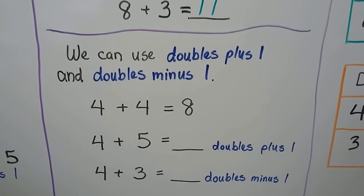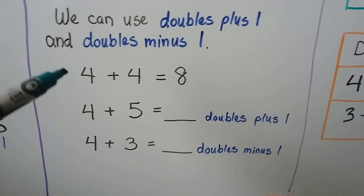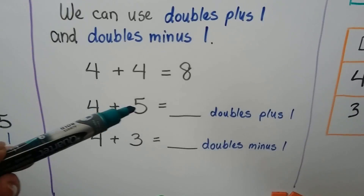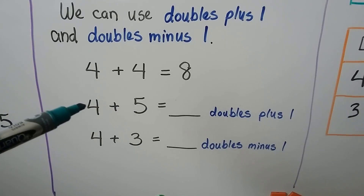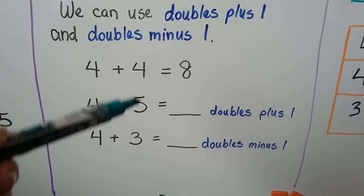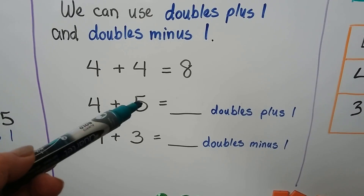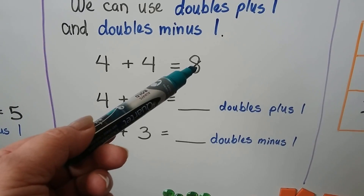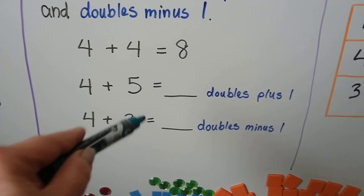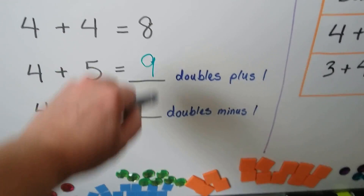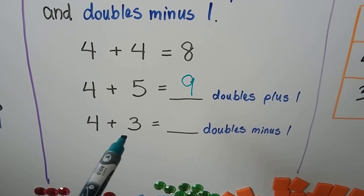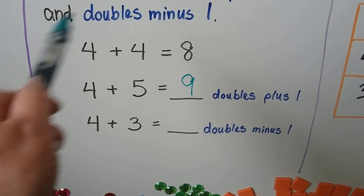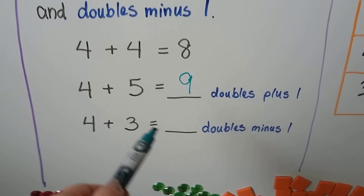We can use doubles plus one and doubles minus one. Four plus four is equal to eight. We can use this to add four plus five — this five is one more than that four, so this would be a doubles plus one. It's four plus four plus one, that's plus one to that sum eight. Four plus five is equal to nine. Four plus three would be a doubles minus one — this three is one less than this four, so the sum is going to be one less than eight. One less than eight is a seven.